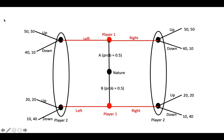Player 1 moves second and can choose either left or right. Note that player 1 knows whether they are a type A player or a type B player when they make their decision. Lastly, player 2 moves and can choose either up or down. Note that player 2 knows whether player 1 has chosen left or right, but not whether player 1 is type A or type B.